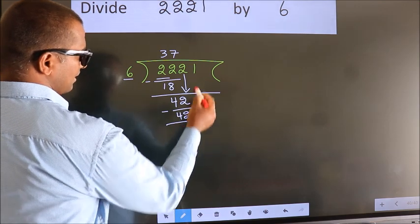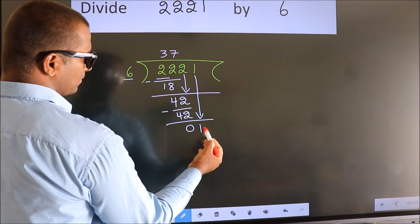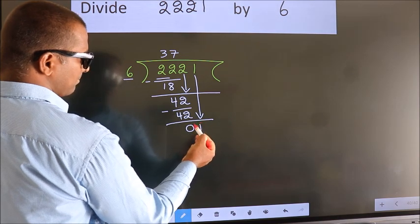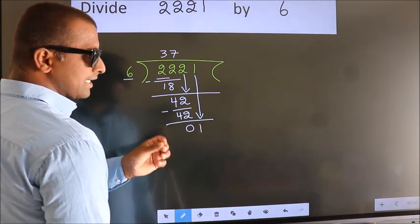After this, bring down the beside number. So 1 down. After this step, the mistake happens.